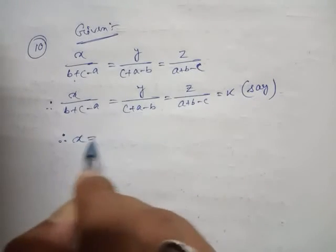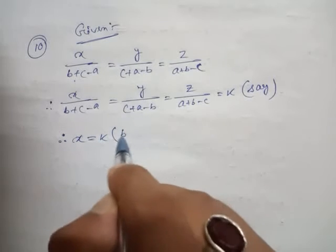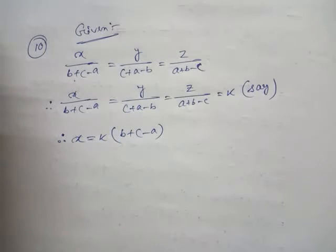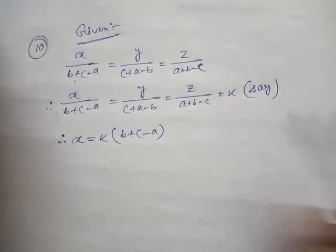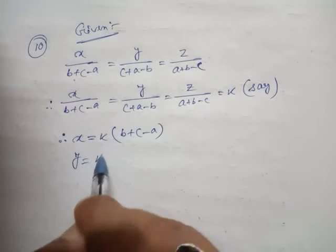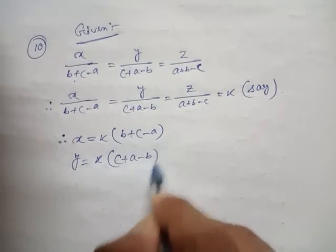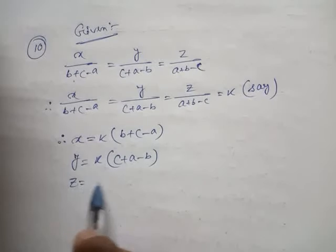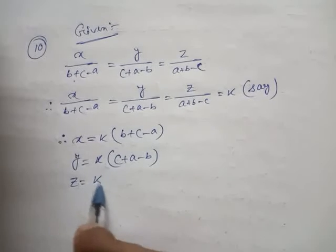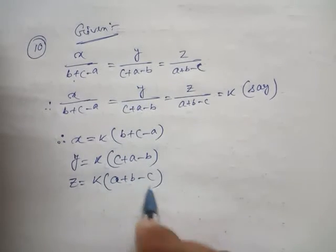Now, if I multiply through by k, then: x equal to k into (b plus c minus a), y equal to k into (c plus a minus b), and z equal to k into (a plus b minus c).